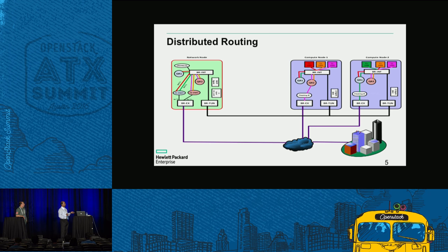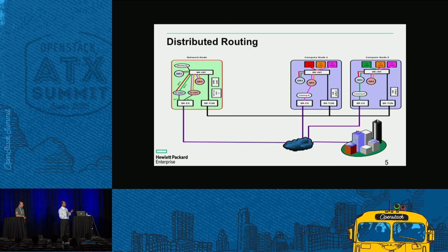The one limitation with DVR is that even though east-west traffic and north-south floating IP traffic are distributed, SNAT traffic still flows through the network node. For DVR routers, we split the legacy router namespace functionality into three separate namespaces: a router namespace for routing, a floating IP namespace for floating IP translation, and an SNAT namespace for SNAT translation.